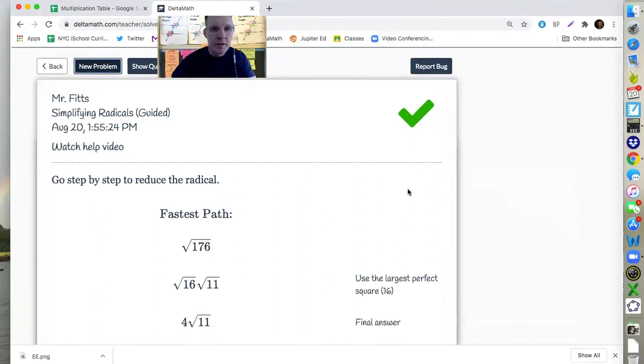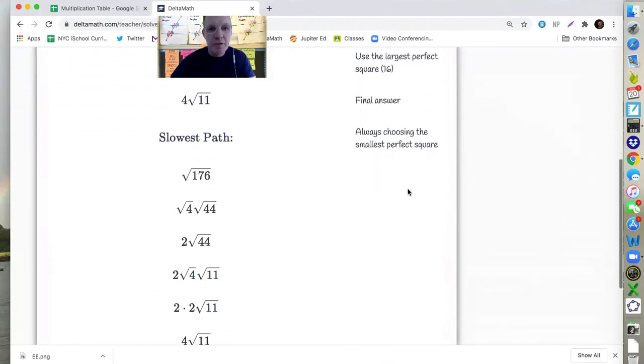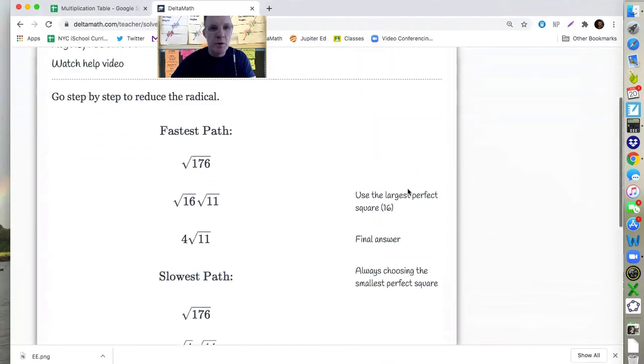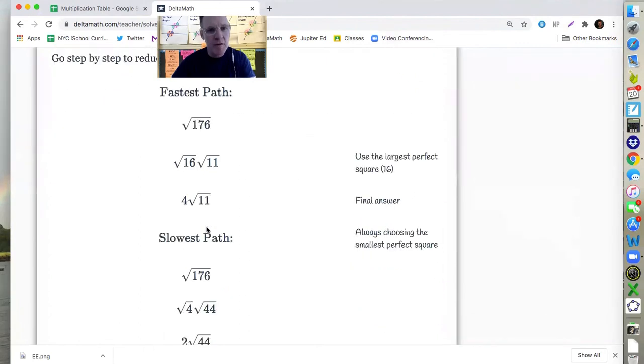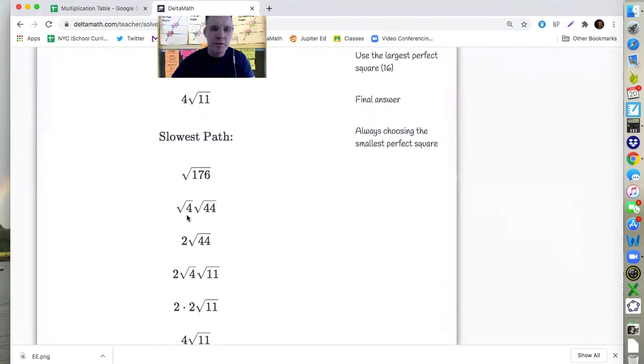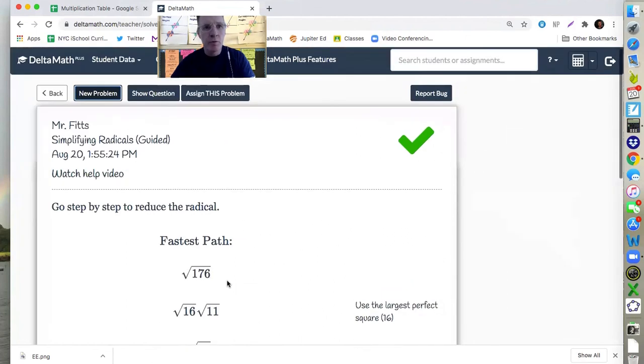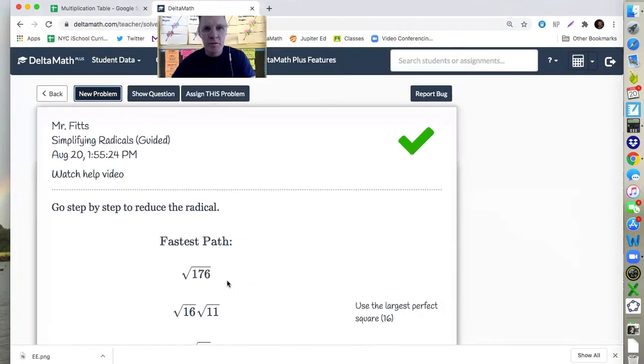Yes. And the cool thing is Delta Math shows you different ways you can do this. So it shows you the most efficient path, the fastest path, and the least efficient. So I could have done radical 4. This would have been 2 times 44. And then I could have done it that way. So both are correct. One is a little faster than the other. One's a little more efficient.